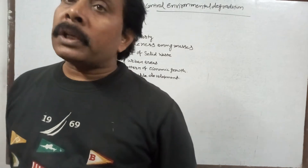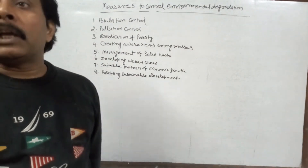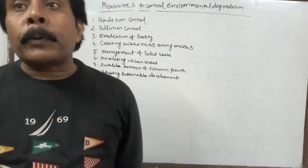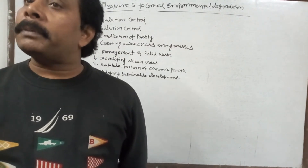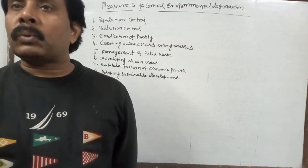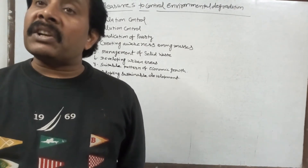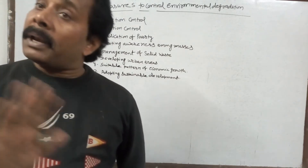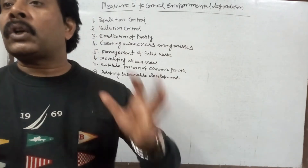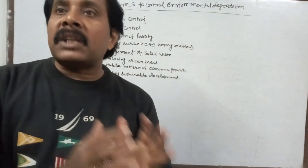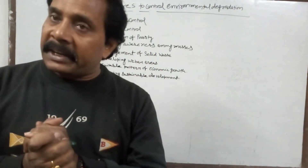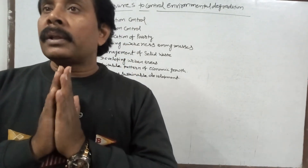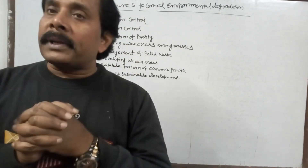The following measures must be taken to overcome the problem of environmental degradation. The first and foremost is population control. There is an urgent need to check population growth. It will help to maintain the balance between the extraction of environmental resources and their regeneration. Falling the growth rate of population will help in maintaining the ecological balance by reducing the size of environmental degradation.